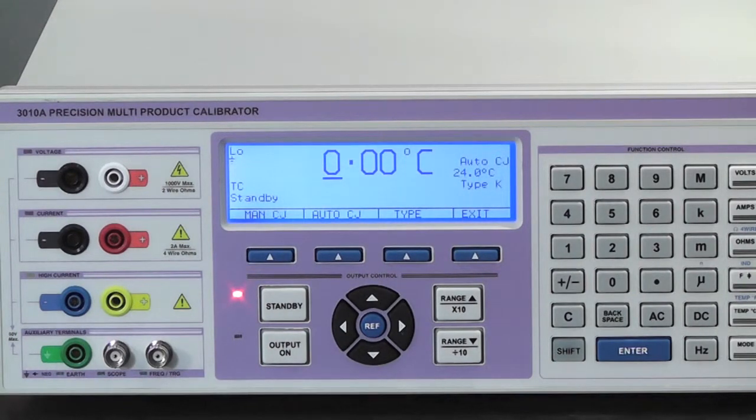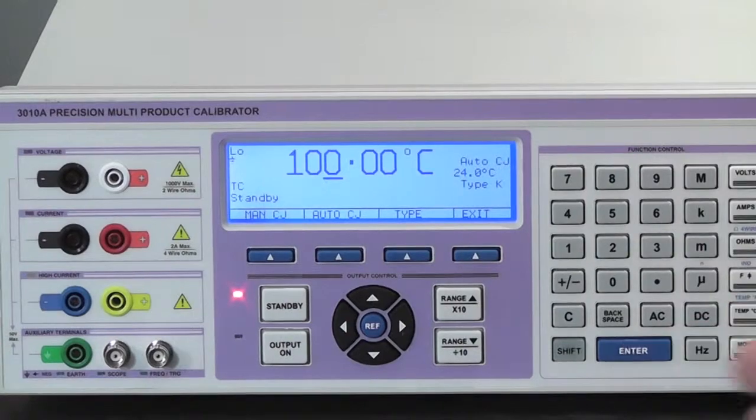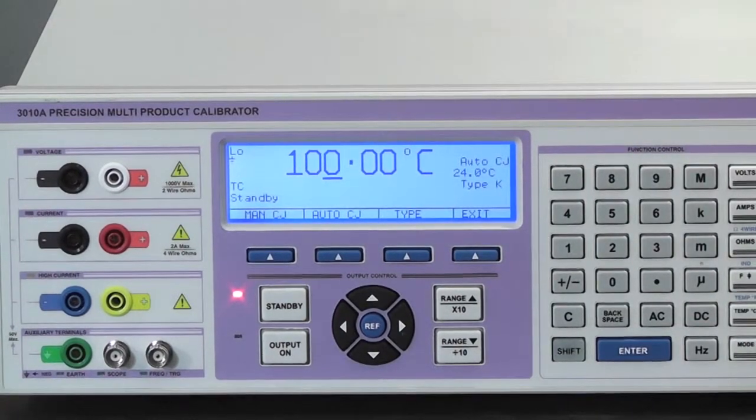Enter the desired temperature which can be anything between minus 250 degrees C to 1820 degrees C. For example 100 degrees C. Press the output on button.